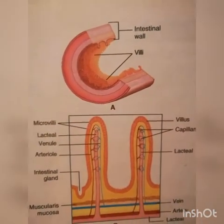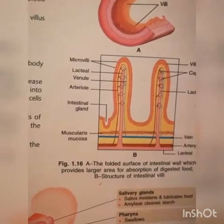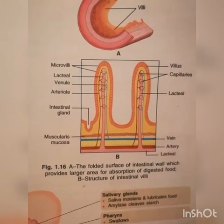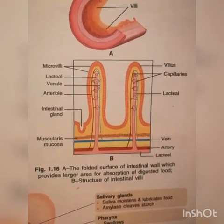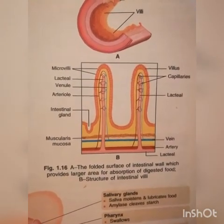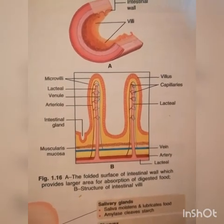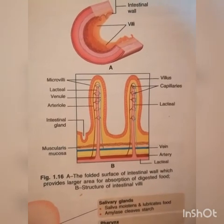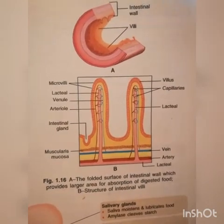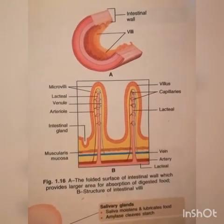See the figure of intestinal wall villi and microvilli. The folded surface of the intestinal wall provides a larger area for absorption of digested food. The structure of intestinal villi includes: microvilli, lacteal cells, venules, arterioles, intestinal glands, muscularis mucosa, veins, artery, lacteal, capillaries, and villi.